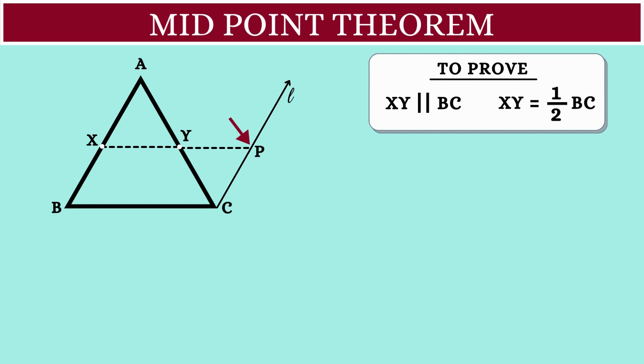Now what's given is AX is equal to BX. This is because X is the midpoint. In the same way, AY will be equal to CY.